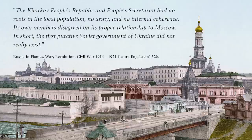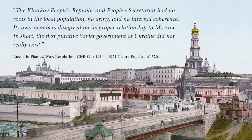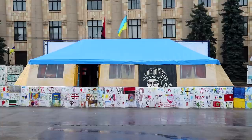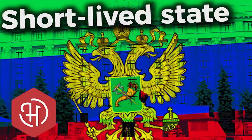The Kharkiv People's Republic and People's Secretariat had no roots in the local population, no army, and no internal coherence. Its own members disagreed on its proper relationship to Moscow. In short, the first putative Soviet government of Ukraine did not really exist. Interesting is that in 2014, a very short-lived Kharkiv People's Republic also saw the light of day. The Kharkiv government did send delegates to Brest-Litovsk to challenge the Ukrainian Rada on the representation of Ukraine, but the Central Powers refused to recognize them, and thus the Kharkiv Bolsheviks aligned themselves with the Moscow delegation.